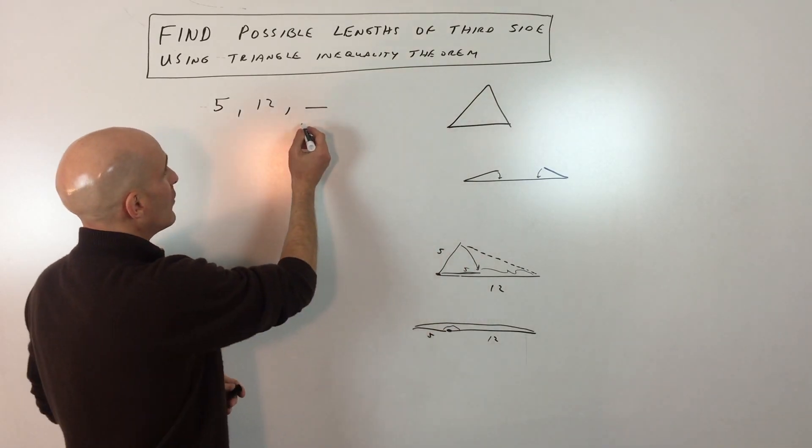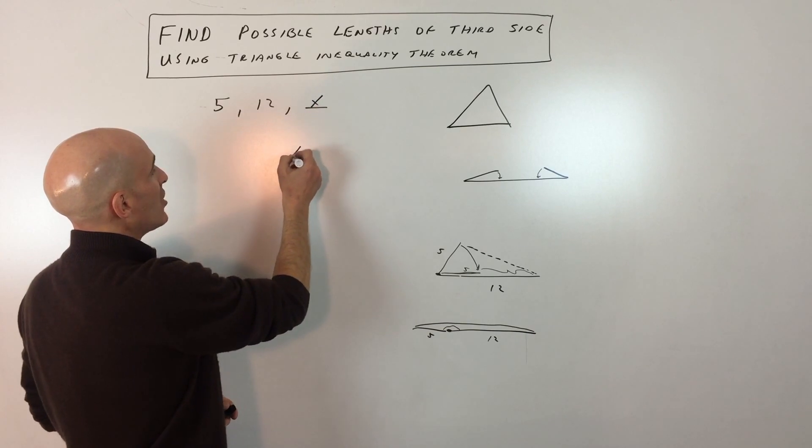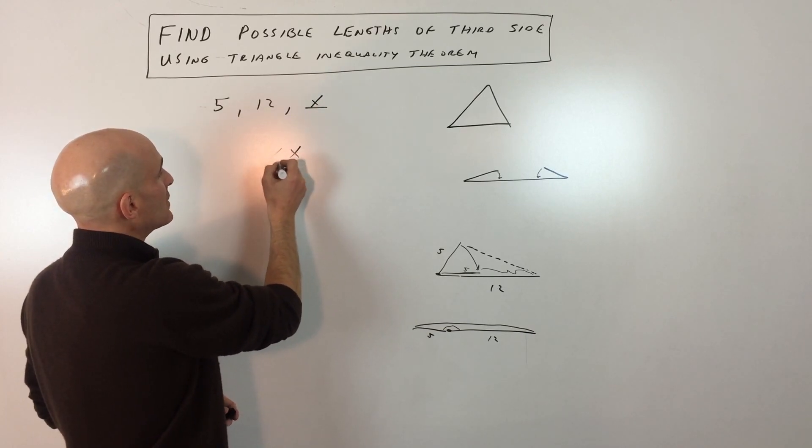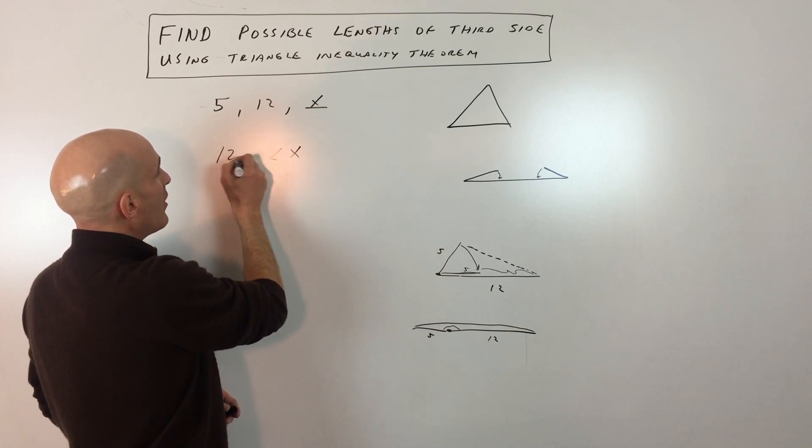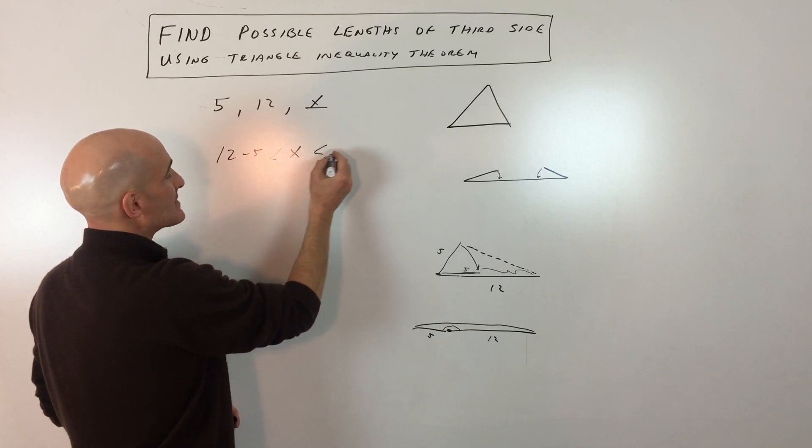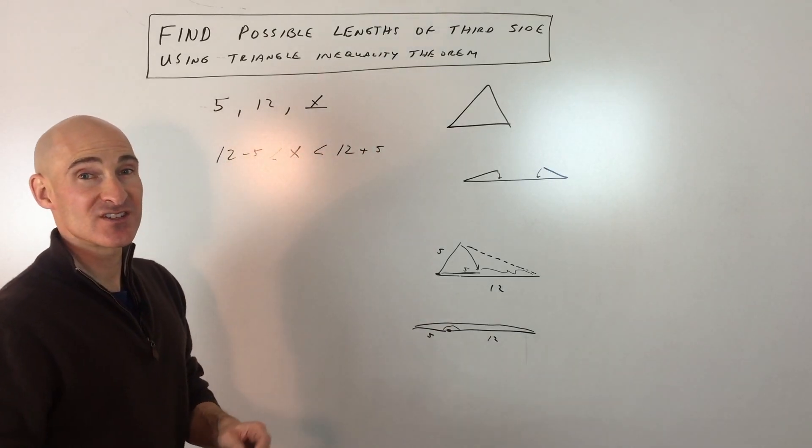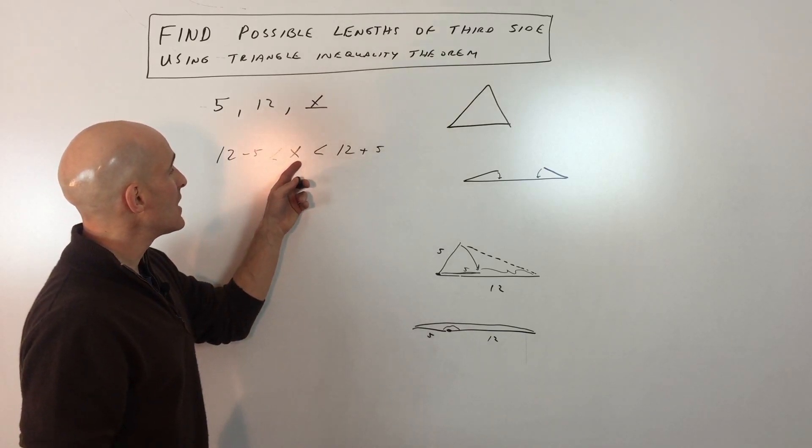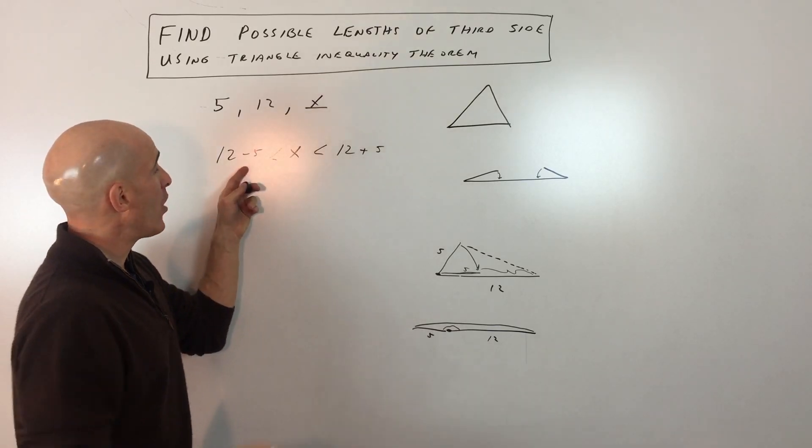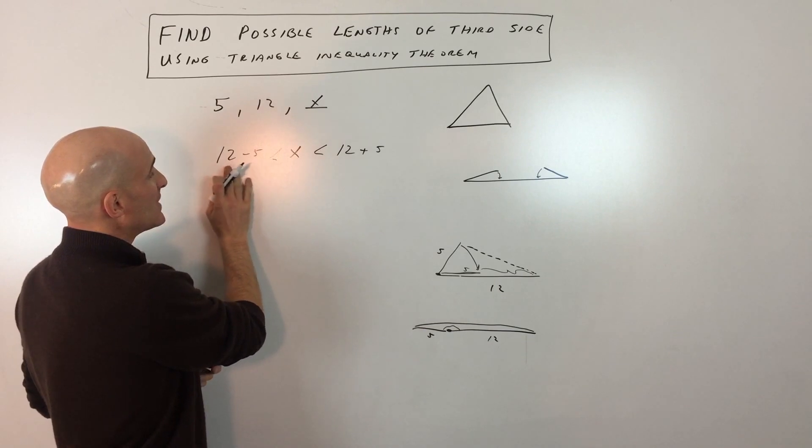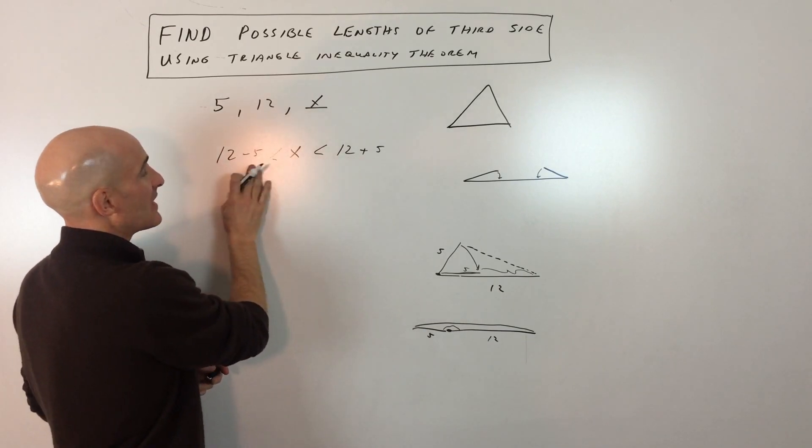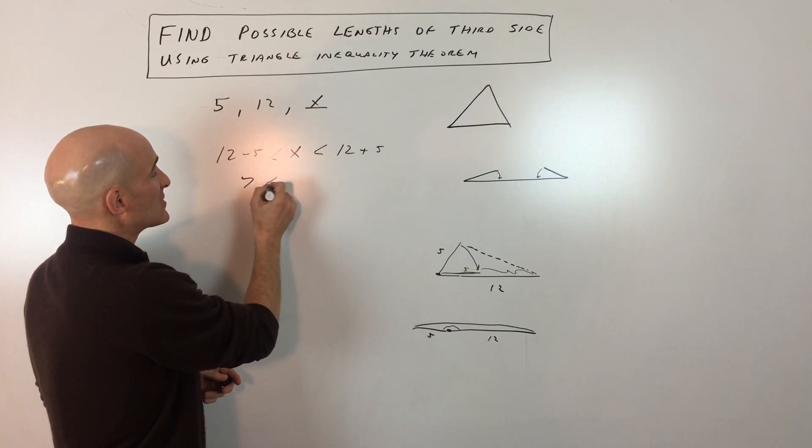So essentially, what we have here for this third side, we'll just call it x, it has to be greater than 12 minus 5 and less than 12 plus 5. So that's the shortcut. If you want to just get down to a simple way of doing this, you can write it as a compound inequality, and it's going to be somewhere in between the sum of the two sides and the difference of the two sides.